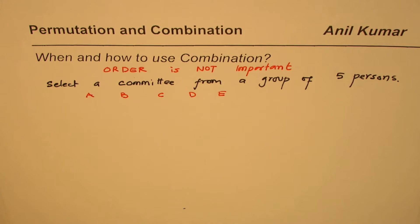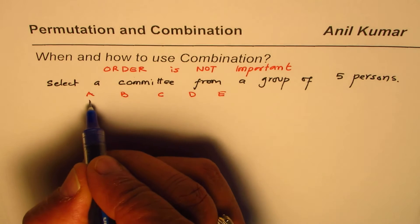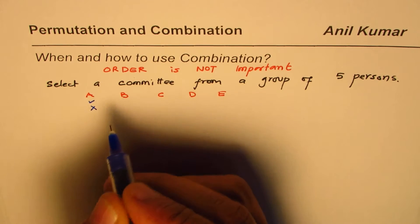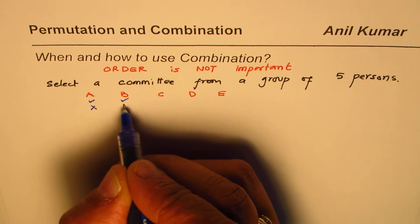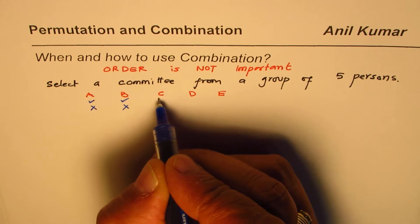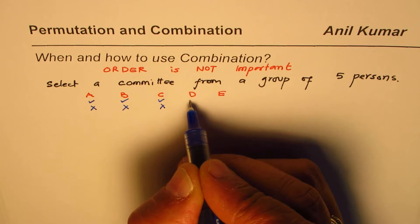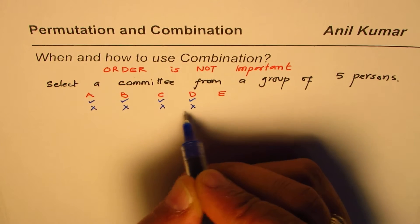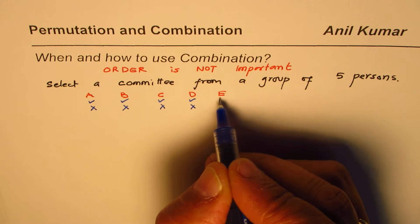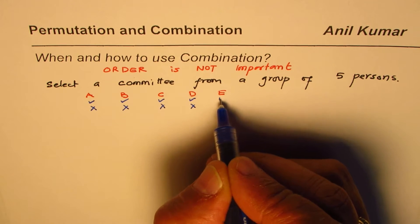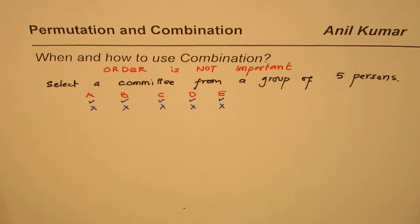You could either select A or you may not select A. You could select B or you may not select B. You may select C or may not select C. Similarly you could select D or may not select D, and for E you may select or may not select.